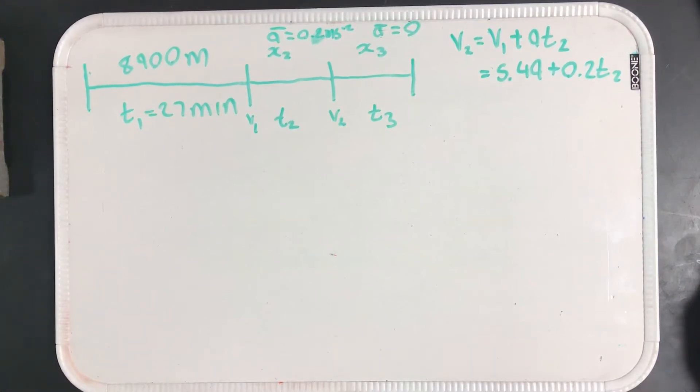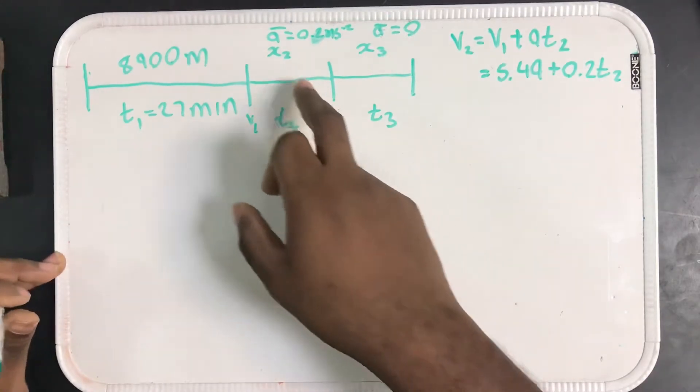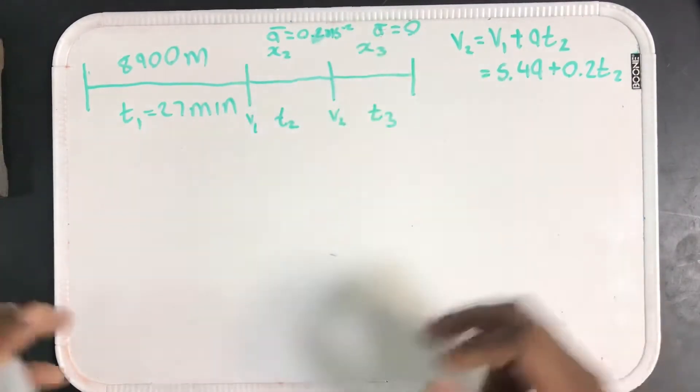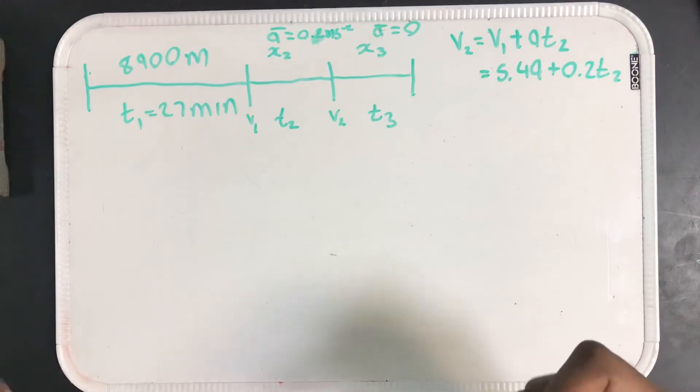In our previous video, we were trying to help Bobby J set some goals. We drew the problem, filled in some blanks, and now we're going to create a system of equations because we have a lot of unknowns. We don't know T2, T3, X2, or X3, and there are a lot of things going on.